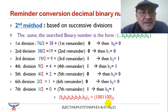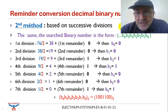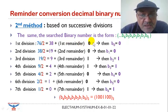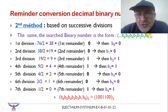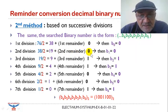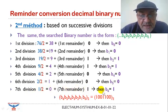The second method is based on successive divisions. The first division is 76 divided by 2, which gives 38 with remainder 0. This remainder is equal to the first term B0. The second division is 38 divided by 2, which gives 19 with remainder 0, equal to B1. We continue, and the last division is 1 divided by 2, which gives 0 with remainder 1, and this last term B6 is equal to 1.